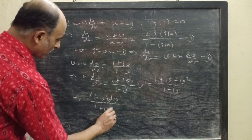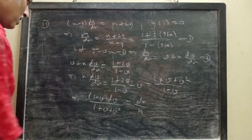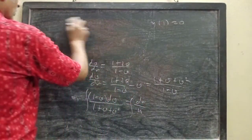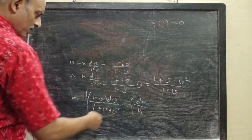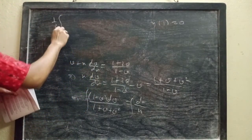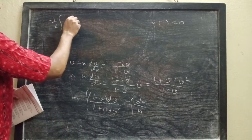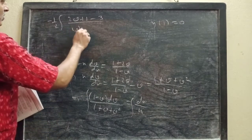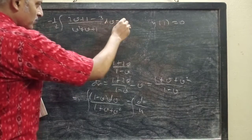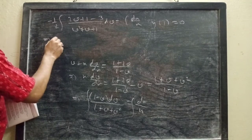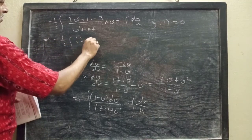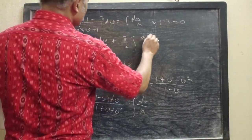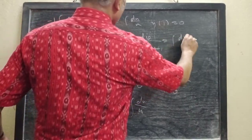From this step we can write x·(dv/dx) equals (1 plus 2v)/(1 minus v) minus v, which gives (1 plus v plus v²)/(1 minus v). So (1 minus v)·dv divided by (1 plus v plus v²) equals dx/x. Now integrating both sides, we rewrite as minus half of (2v plus 1)/(v² plus v plus 1) dv plus (3/2)·dv/(v² plus v plus 1) equals dx/x.